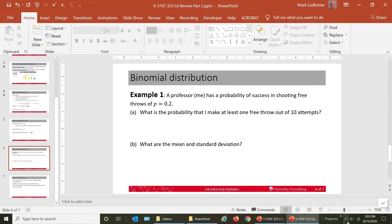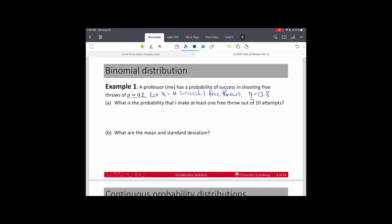Now we're going to do a quick example. Let's do an example here of the binomial distribution. Example one. Let's say a professor, me, has a probability of success in shooting free throws of p equals 0.2. I'm being very generous to myself. My probability of being successful with free throws is probably much less than that, but let's pretend. So the first thing I need to do, and the first thing you need to do for this problem, is to write down that x is equal to the number of successful free throws. Make sure you define what x is. And then q, of course, will be 1 minus 0.2 or 0.8. And what we're looking for is that the probability that I make at least 1. That is the probability that x is 1 or more.